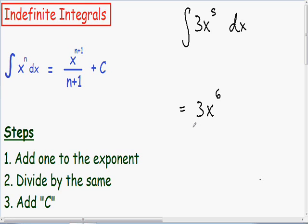Now moving on to step number 2, we need to divide by the same. So since we have a 6 exponent we need to divide by a 6 exponent.